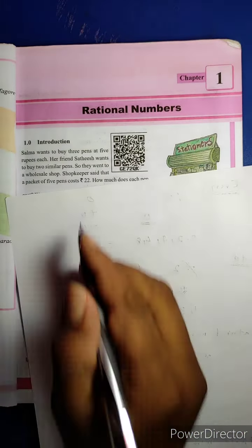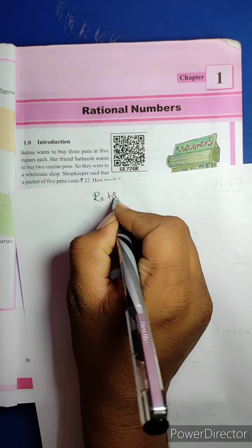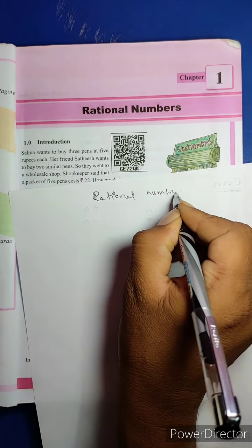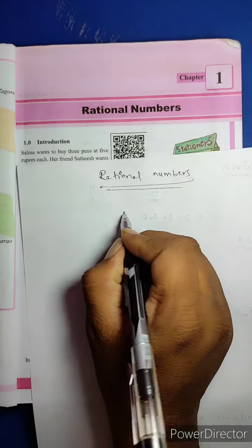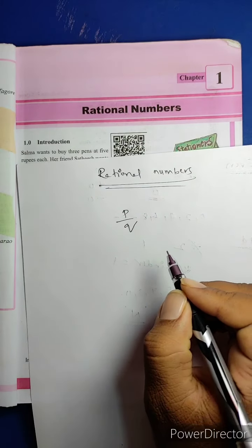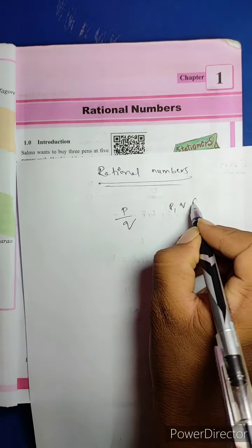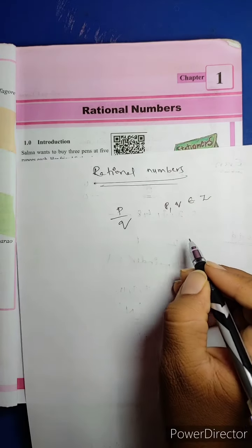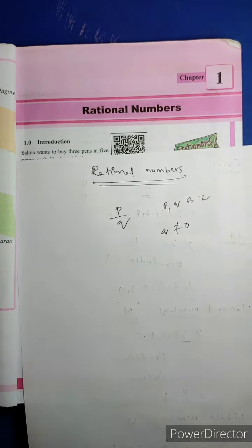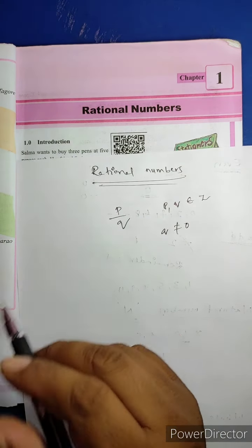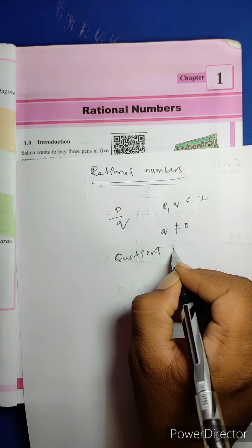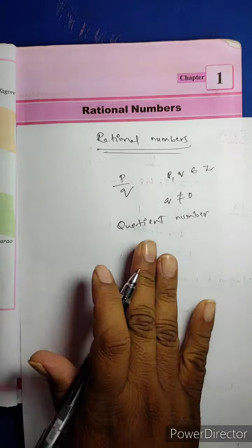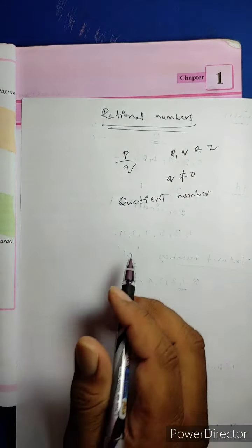Then our topic: Rational Numbers. What is meant by Rational Numbers? The numbers which are expressed in the form of P by Q, where P and Q belong to integers and Q is always not equal to 0, are called Rational Numbers. Another name for Rational Numbers is Quotient Numbers. All fractions are rational numbers.